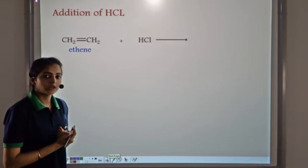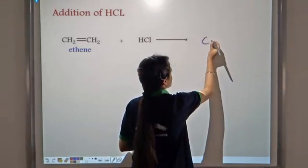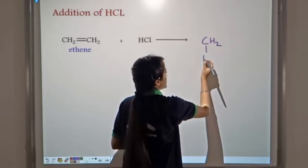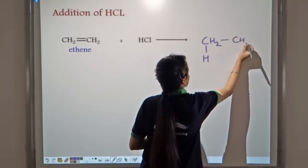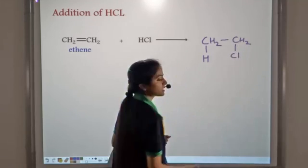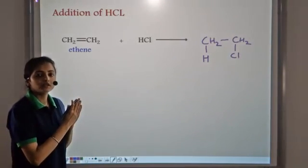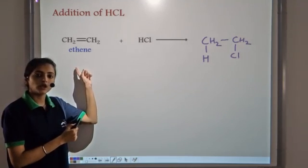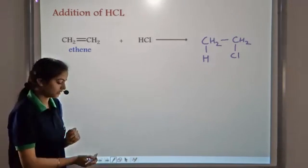The unsaturated hydrocarbon gets converted into a saturated product by the addition reaction. Similarly, when ethene reacts with hydrogen chloride, the H of HCl attaches itself to one carbon atom and the Cl of HCl attaches itself to another carbon atom by the addition reaction, converting the unsaturated hydrocarbon into the saturated product.